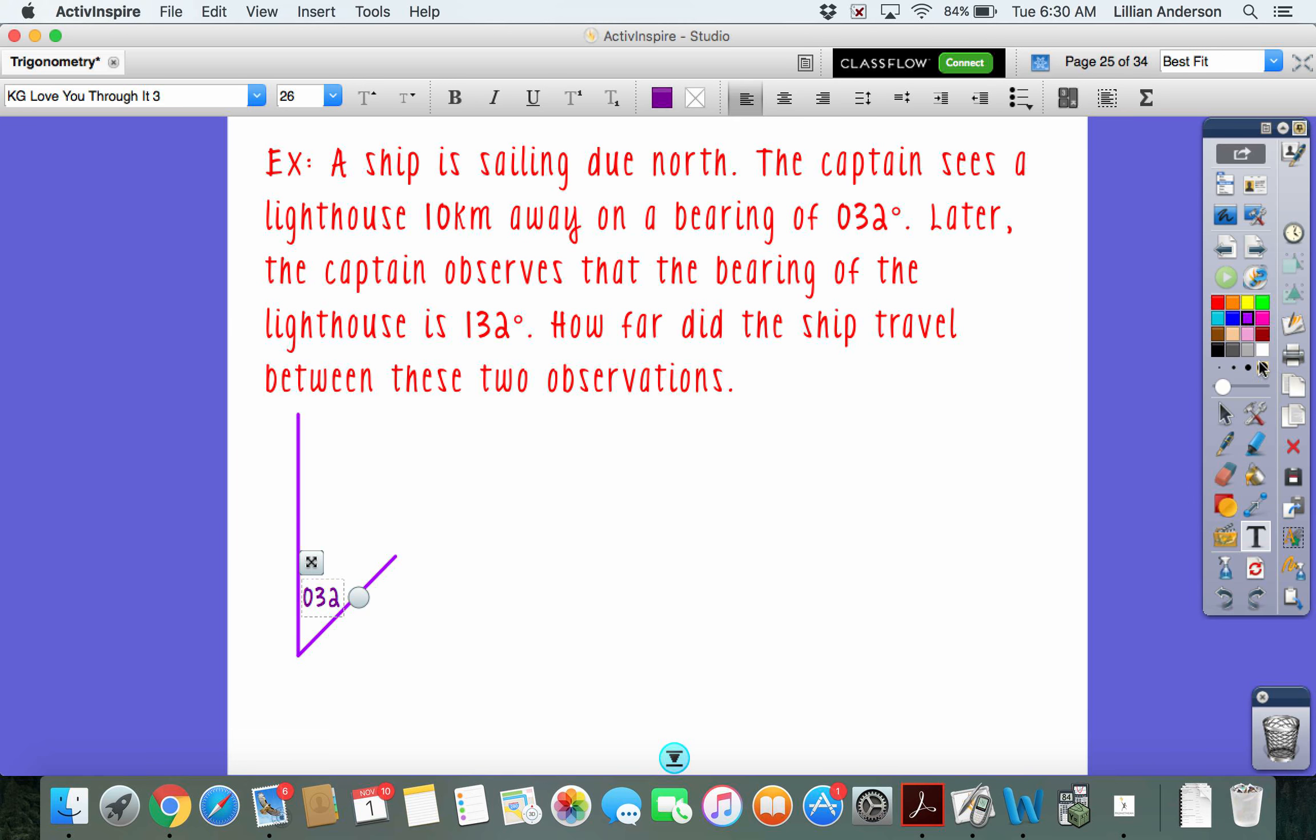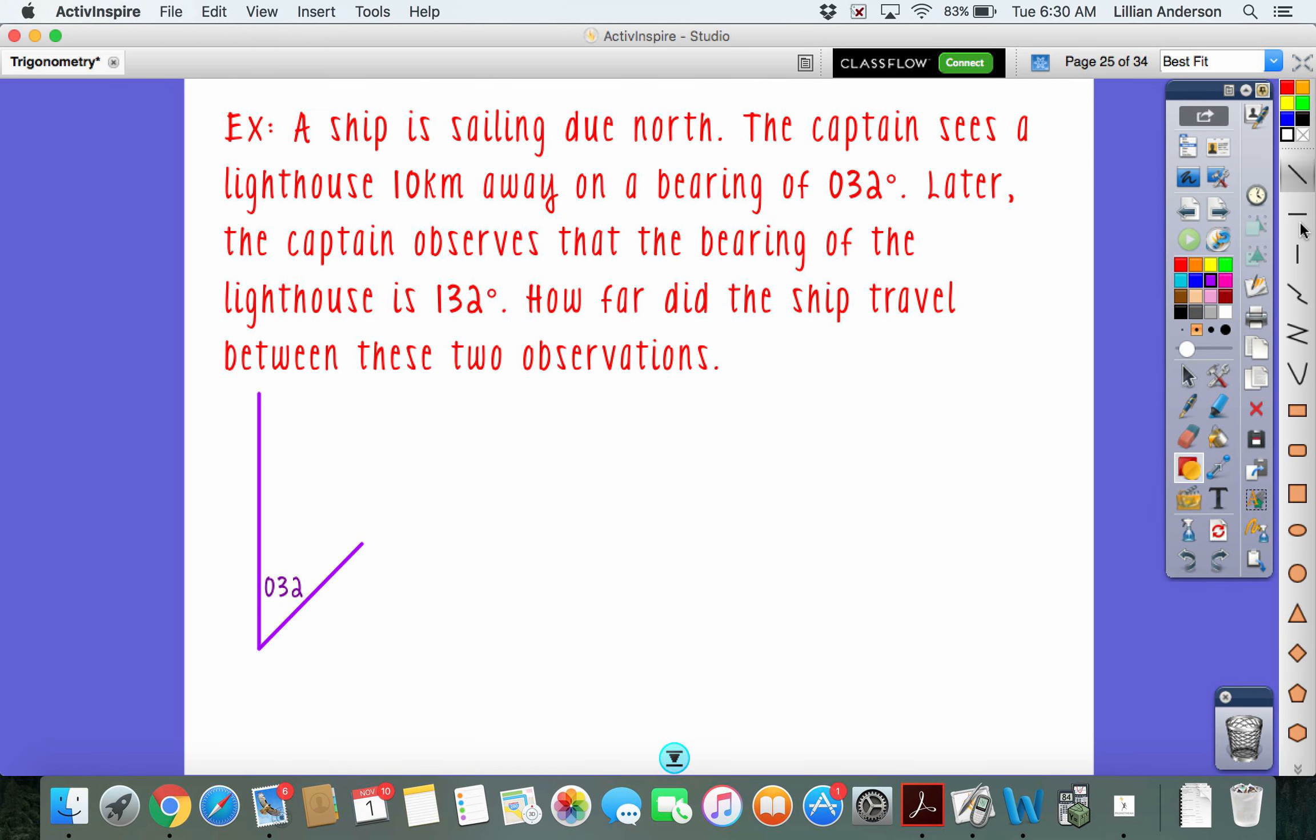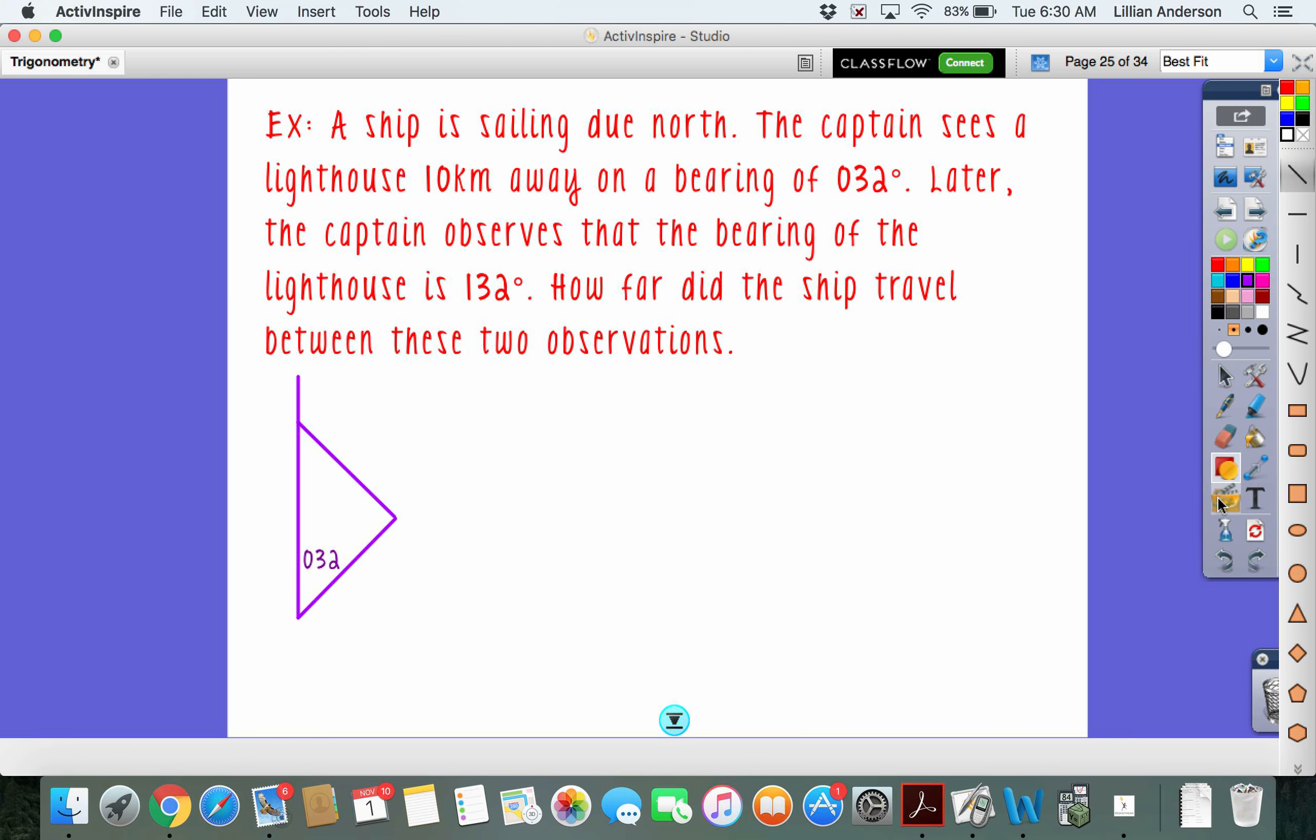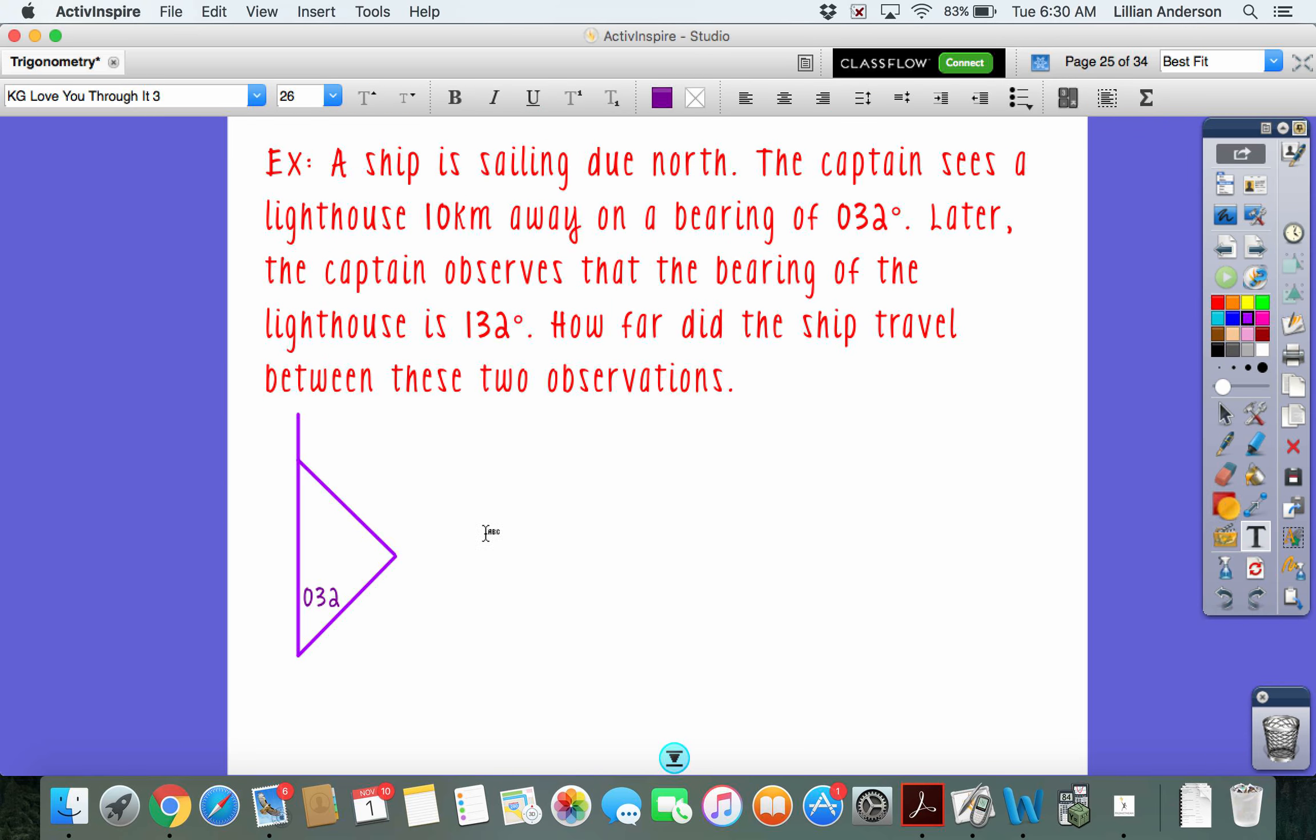Later, that means later along his travels, the captain observes that the bearing of the lighthouse is 132 degrees. That means at some other point in time, on his travels, he sees the lighthouse again, but this time it's at 132 degree bearing. So that 132 is actually going to be located right here. Now it's asking you how far does the ship travel between these two observations. So basically, you're trying to find this distance right here. And we know that the captain sees the lighthouse 10 kilometers away on a bearing of 32 degrees. So 10 will be right here. So we're looking for the value of X.